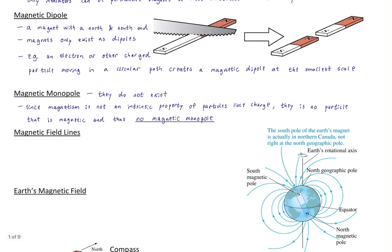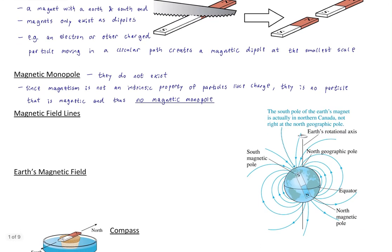That begs the question: what is it? We'll talk a bit about how moving charge can create it. But that also leaves questions unanswered, which will eventually lead to the idea of electromagnetism — that electricity and magnetism are united as a single force, and that an electromagnetic wave is light, which will finally get us on to our next topic, discussing light.